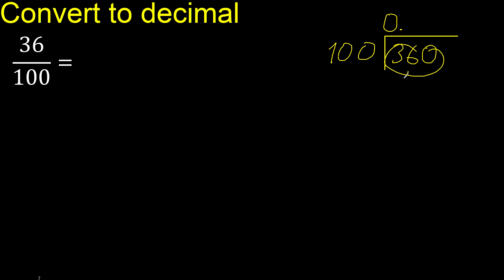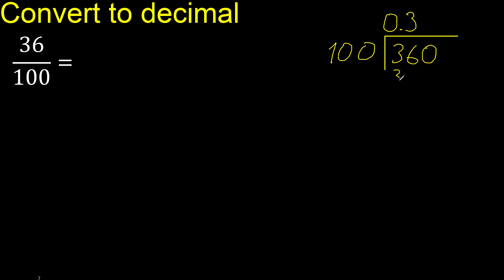Is not less, therefore 100. Multiply by which number is nearest to 360 but not greater. Multiply by 4 is 400 — is greater. Multiply by 3 is 300 — is not greater. Ok. Subtract: is 60.